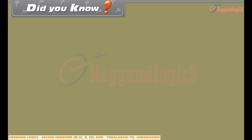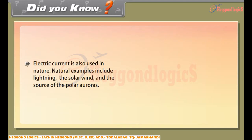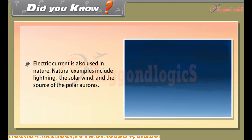Did you know? Electric current is also used in nature. Natural examples include lightning, the solar wind, and the sources of the polar auroras.